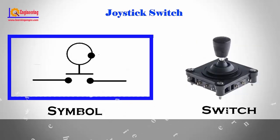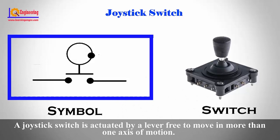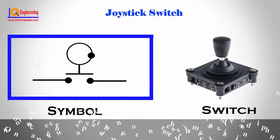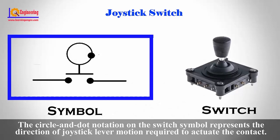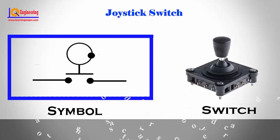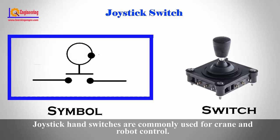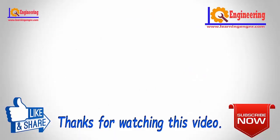Joystick switch. A joystick switch is actuated by a lever free to move in more than one axis of motion. One or more switch contact mechanisms are actuated depending on which way the lever is pushed, and sometimes by how far it is pushed. The circle and dot notation on the switch symbol represents the direction of joystick lever motion required to actuate the contact. Joystick hand switches are commonly used for crane and robot control.